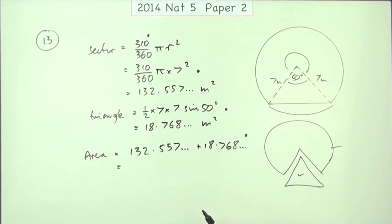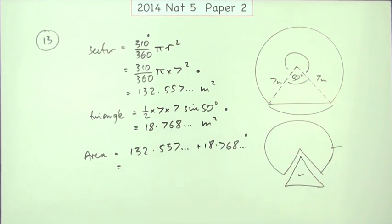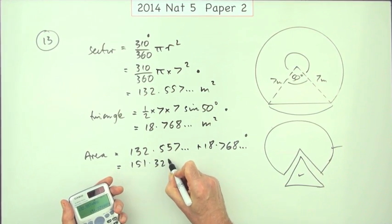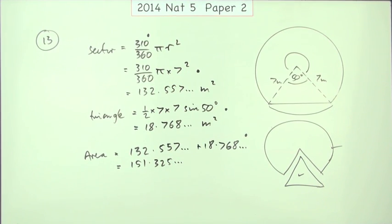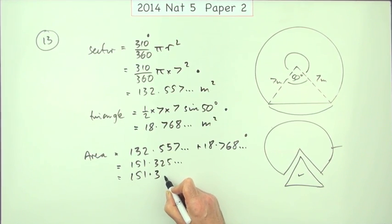That's worth a mark because that counts as your strategy. What was I doing? I was getting the sector and I was getting the triangle and I was going to add them. So there's four marks so far. The final mark B for the answer. Unfortunately I've got this stored in my calculator, I haven't got all of that, so I'm going to lose a wee bit here. And you press that in, you get 151.325 and so on. So rounding that off, 151.3 square meters, just to give it one decimal place. And that would be your final mark.